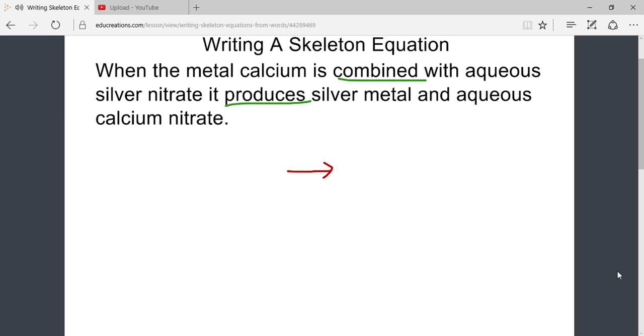In this case, our reactants are the metal calcium. The element calcium is simply represented by the symbols Ca. Most metals are typically a solid, so we could add this information to it.